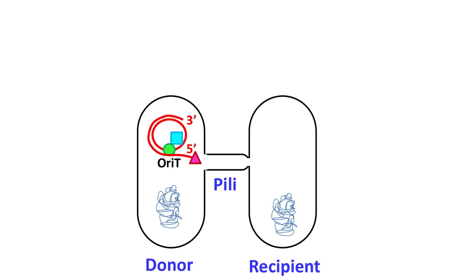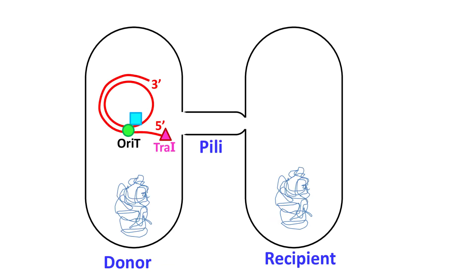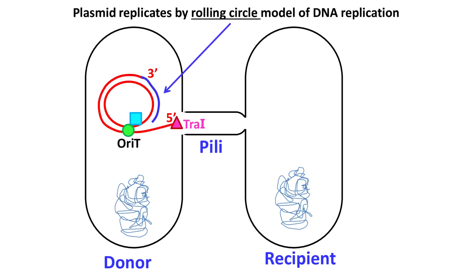During this process, the plasmid present in the donor cell replicates itself by rolling circle model of DNA replication.